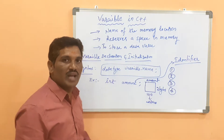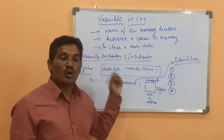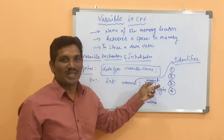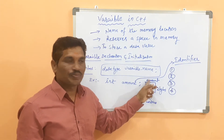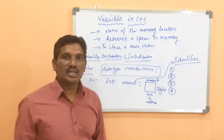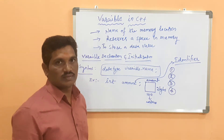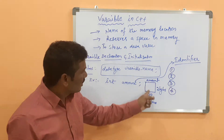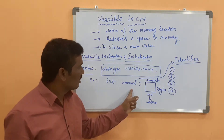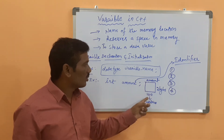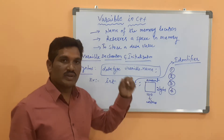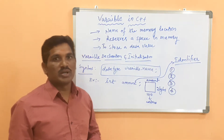How do you retrieve the value from memory? With the variable name. That is why the variable is nothing but the name of the memory location. Whenever the declaration of the variable occurs, it reserves space in memory based on the data type. The variable name corresponds to an address location where the value will be stored in memory at a particular address location.